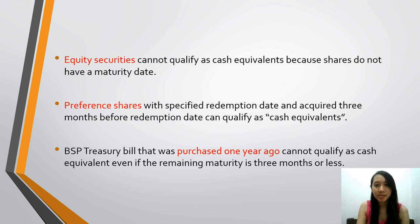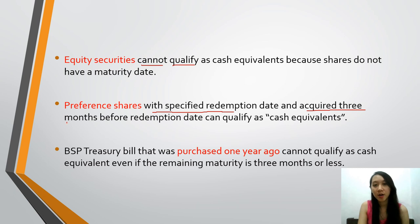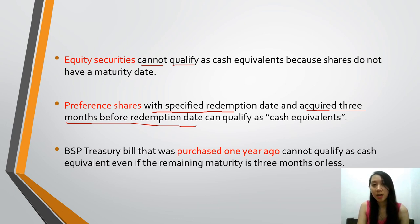I want to emphasize these important points. Equity securities cannot qualify as cash equivalents because shares do not have a maturity date. However, preferred shares with a specified redemption date, acquired three months before that redemption date, can qualify as cash equivalents — because they meet the rule of being acquired three months before the maturity or redemption date.